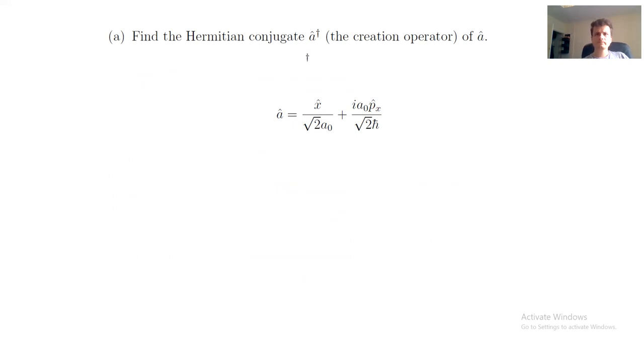If you remember that both x and px are Hermitian operators, and as such, they coincide with themselves. For this reason, when we compute the conjugate of this expression, the only thing that changes sign is the imaginary component i in front of the second term.